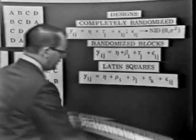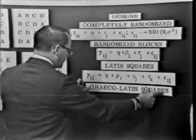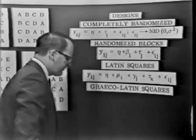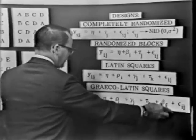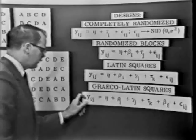Now, the Graeco-Latin square is an experimental design very much like the Latin square design, except that it has room for three blocking variables. Here's the mathematical model associated with the Graeco-Latin square.